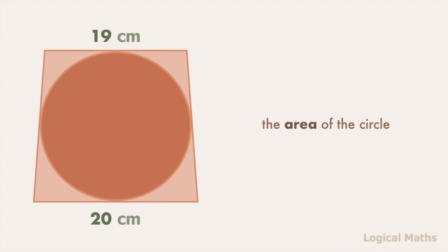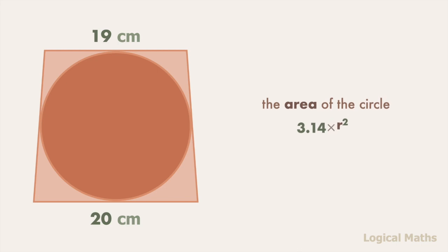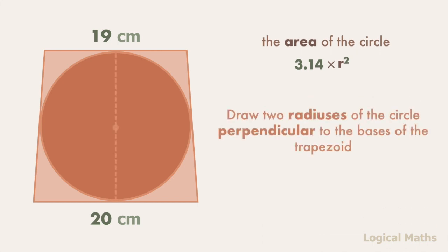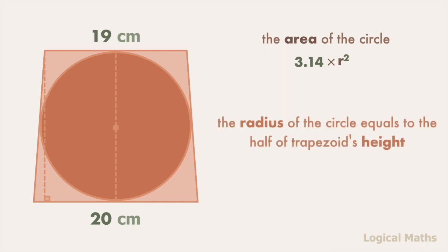The area of a circle equals pi multiplied by r squared, where pi approximately equals 3.14 and r is the length of the circle's radius. After substituting the pi value we get 3.14 multiplied by r squared. Let's draw two radii of the circle perpendicular to the bases of the trapezoid. This length equals the diameter of the circle and also the height of the trapezoid. So the radius of the circle equals half of the trapezoid's height.